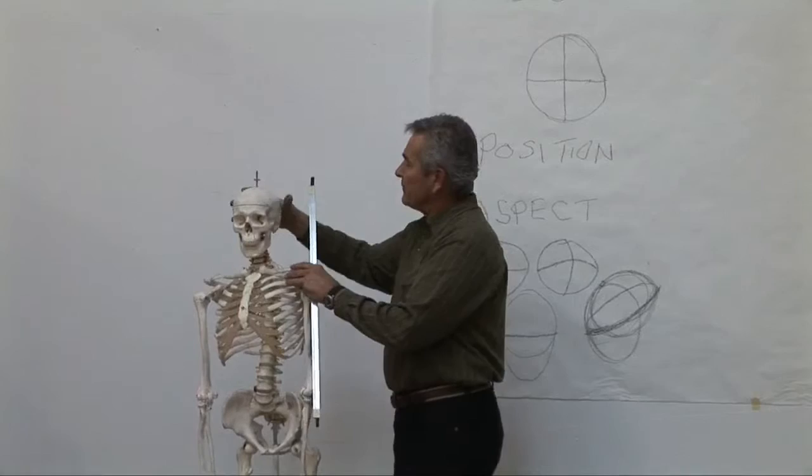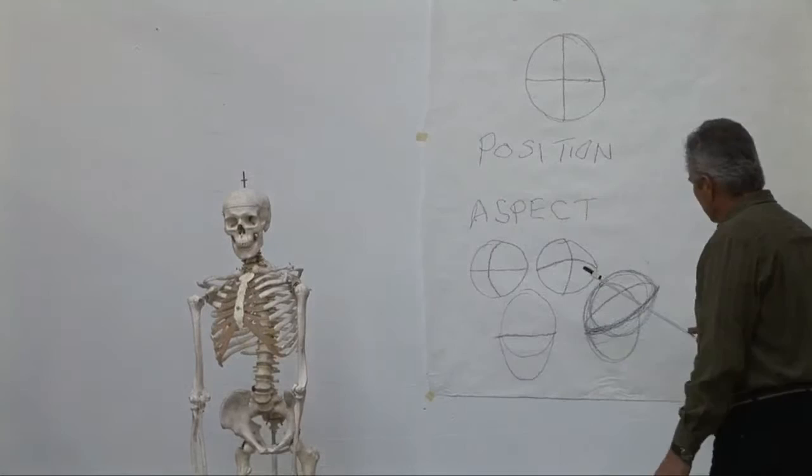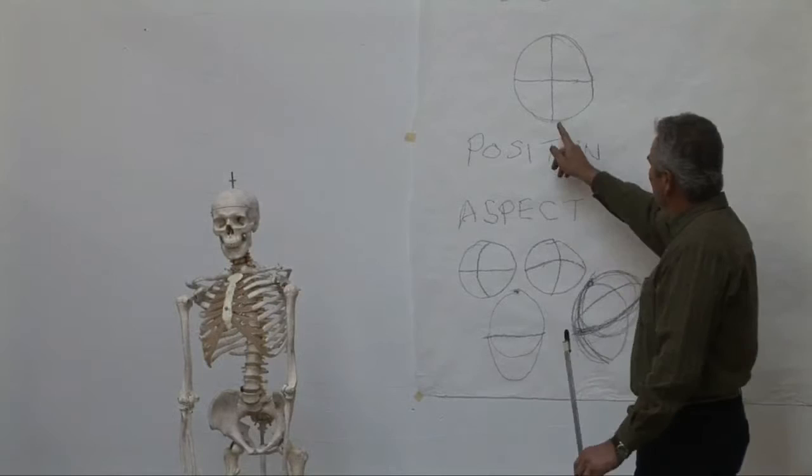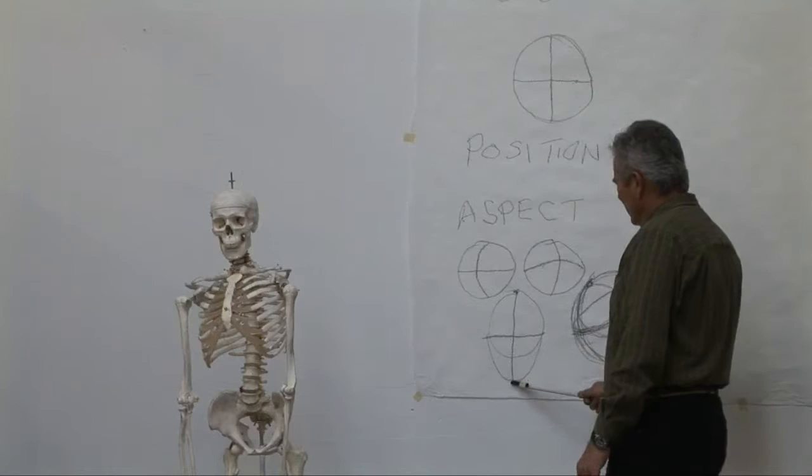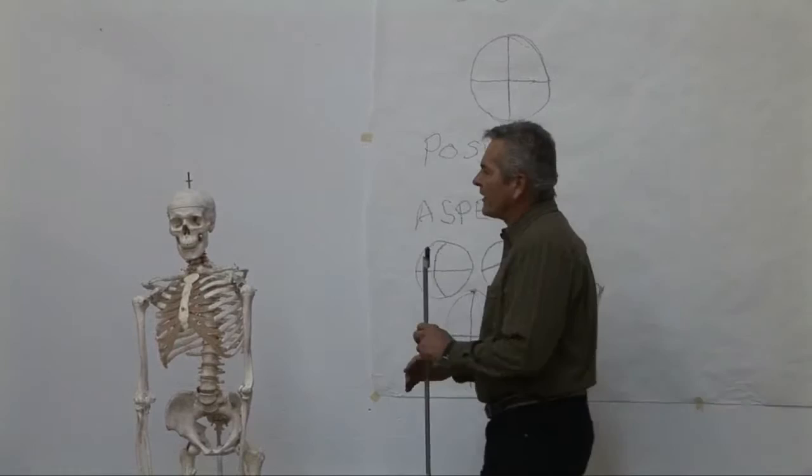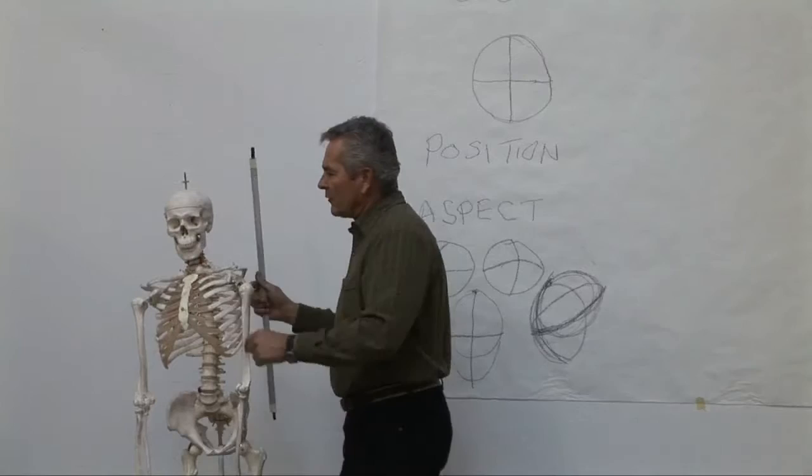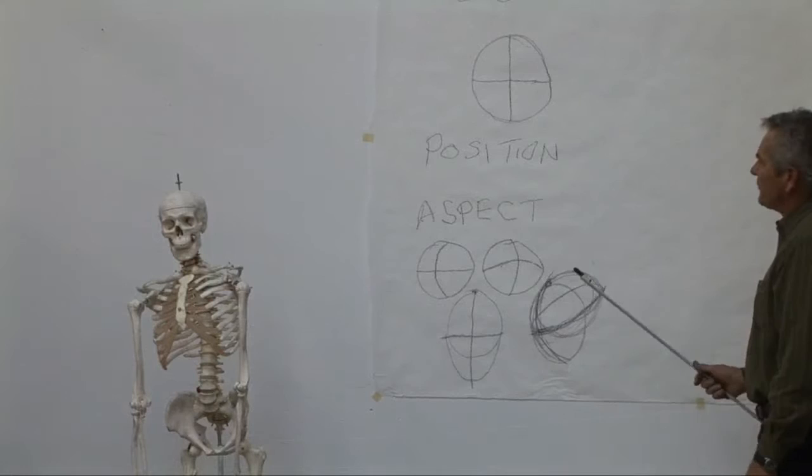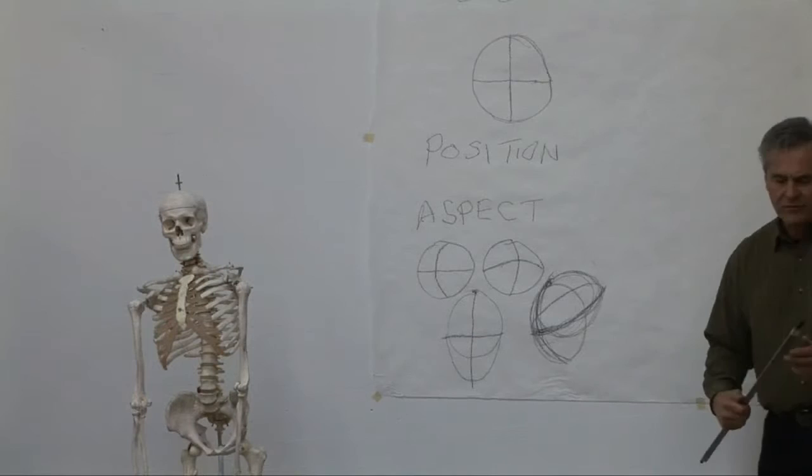But this line is right now in the middle. So now we've got a line going this way and a line going this way. And so what you have now is a way to indicate position and aspect without using anatomy, but in a way, this is a very good way to deal with the gesture of the head.